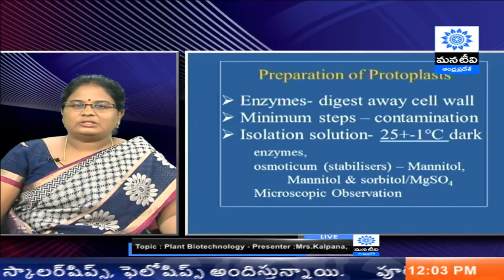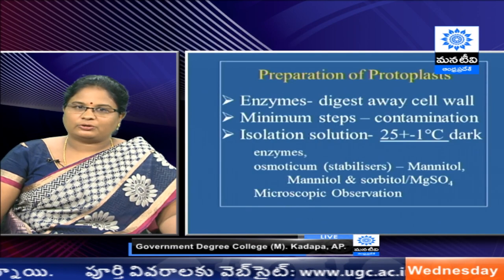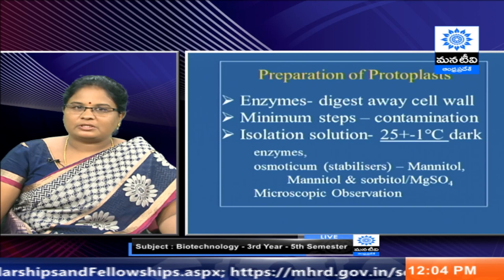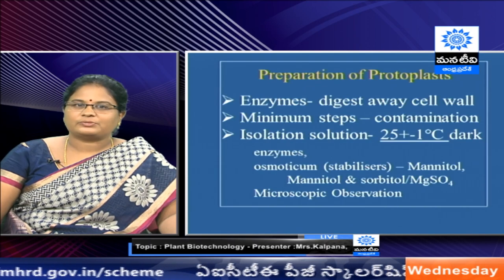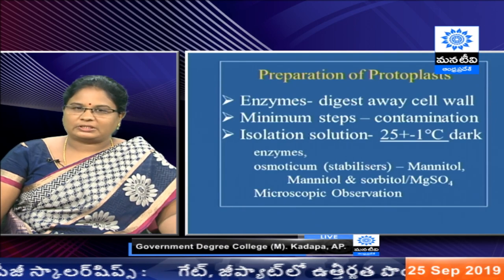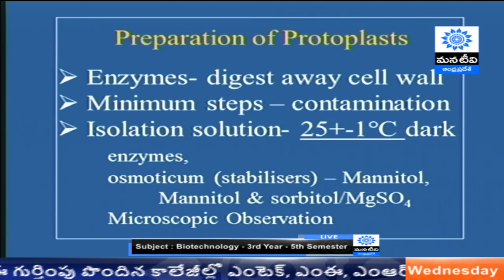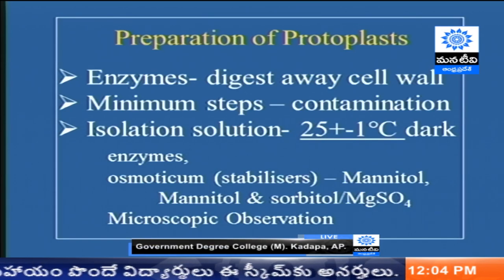For the transformation methods on the protoplast, we first need to purify or prepare the protoplast. In general, the cell wall contains cellulose, hemicellulose, and pectins. So we use enzymes which digest away the cell wall — these enzymes are cellulases, hemicellulases, and pectinases. We have many different protocols for preparing protoplasts. If there are more steps during purification, there is a greater chance of contamination, so we prefer methods with minimum steps.